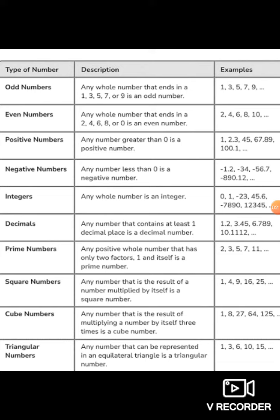Okay. Now triangular numbers. Triangular numbers are represented in an equilateral triangle. 1, 3, 6, 10, 15, 21, 28.